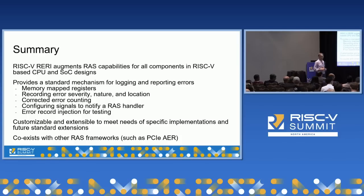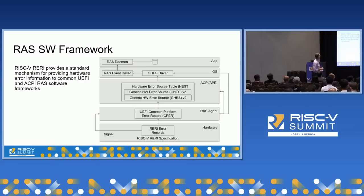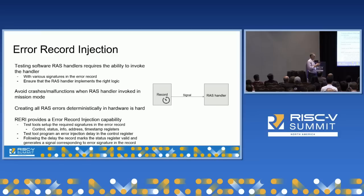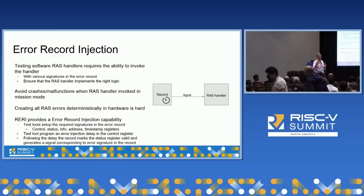Q: Regarding error record injection — you mentioned configuring an error to be signaled at some point in the future. How is that delay measured? A: It can be counted clock cycles, which is the typical approach. A system designer can choose what frequency of cycles to count. Essentially you're counting some form of clock cycles, or it could be retired instructions.